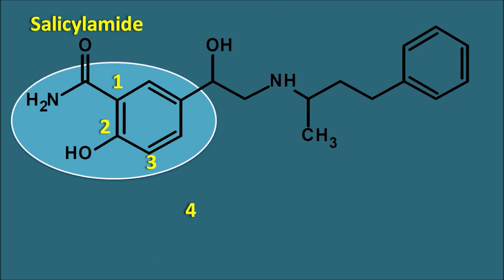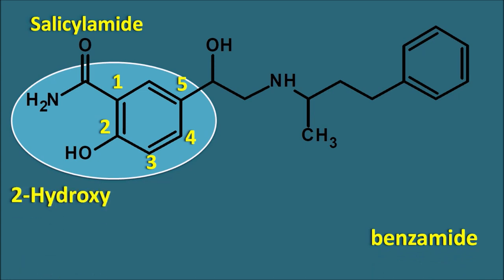Starting the numbering from the amide: positions one, two, three, four, five — an ethyl side chain is attached at the fifth position. For the IUPAC name, since the compound has an amide functionality attached to the phenyl ring, it is a benzamide. This benzamide has a hydroxy group at the second position, so Labetalol is a 2-hydroxybenzamide derivative, which is the salicylamide derivative.